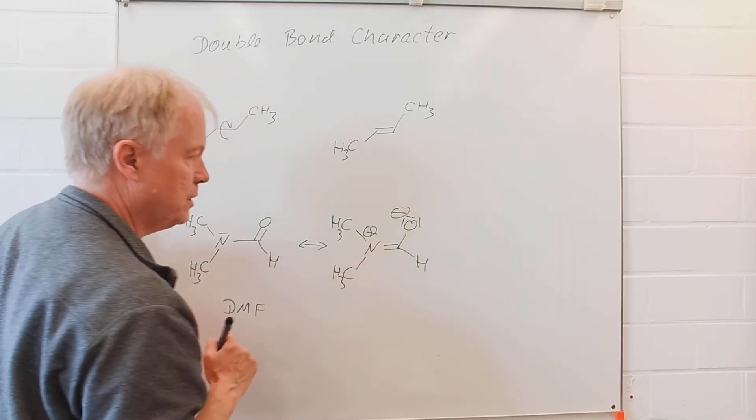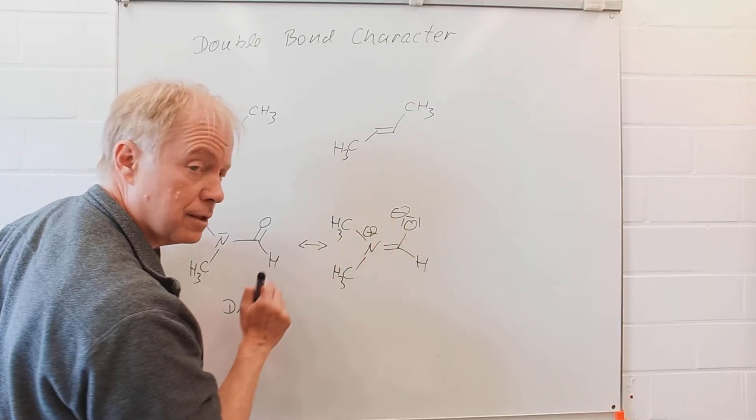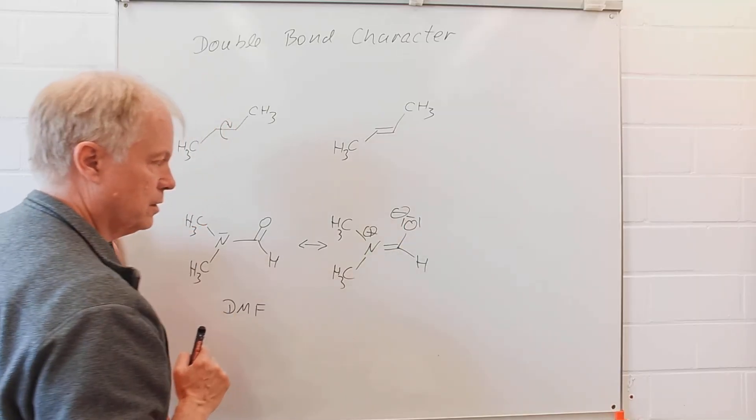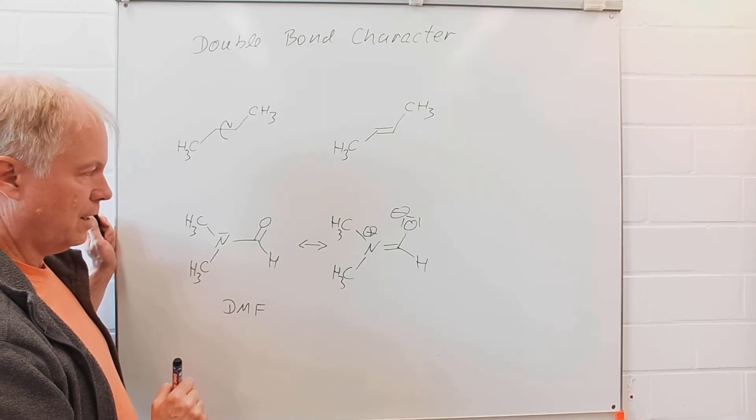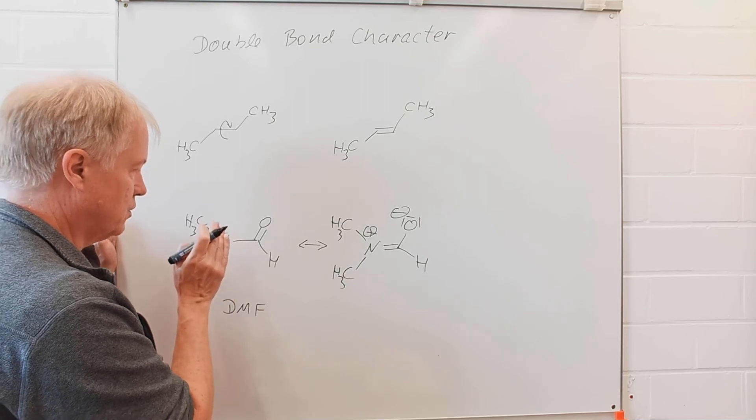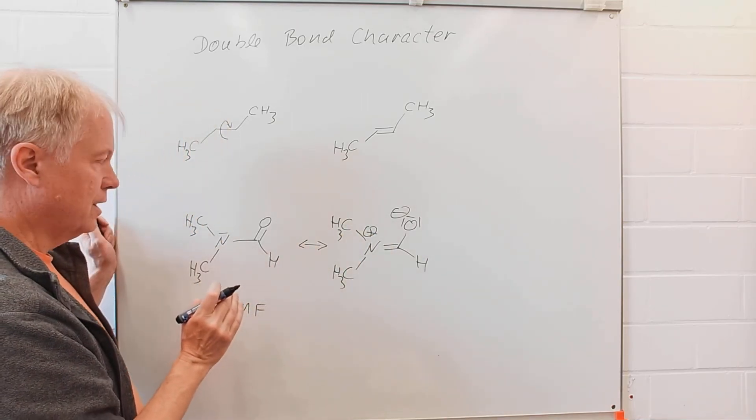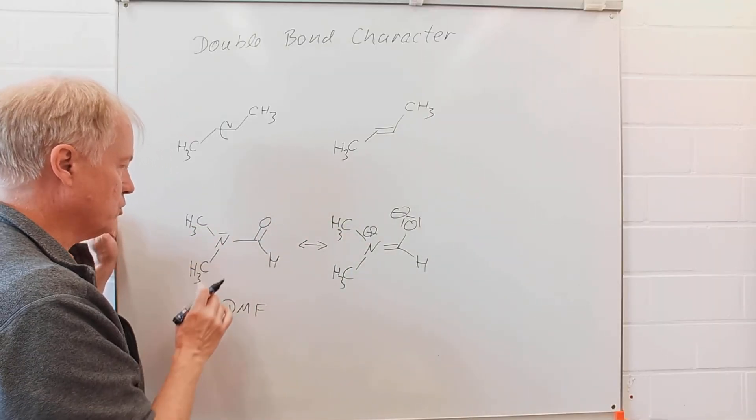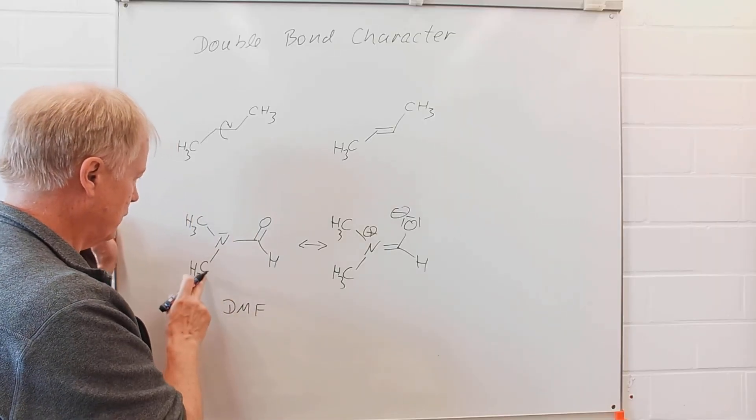This is the mesomeric structure: positive charge at the nitrogen, negative charge at the oxygen, and a double bond between the nitrogen and the carbon. So it's not a single bond, it's not a double bond—it's somewhere in between, maybe a bond order of 1.2. As a result, those two methyl groups are different from each other.